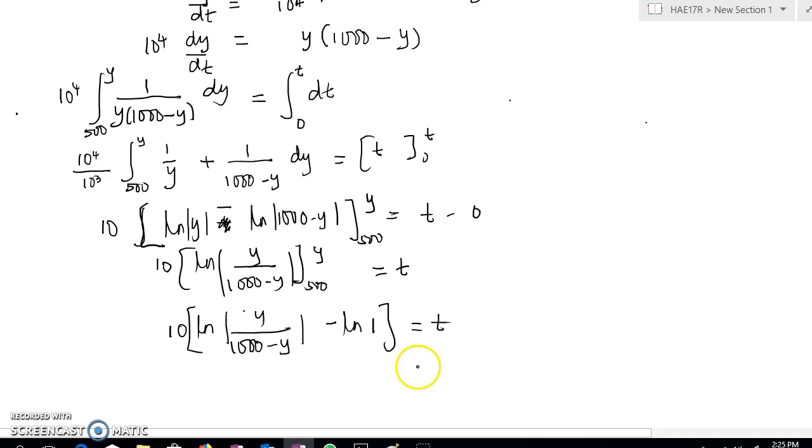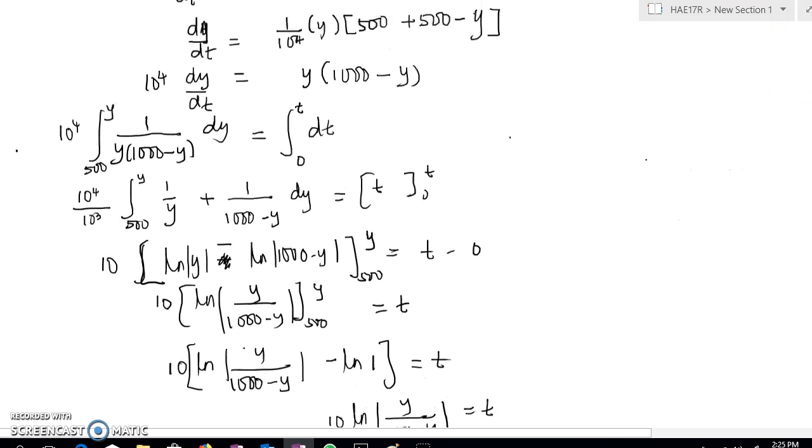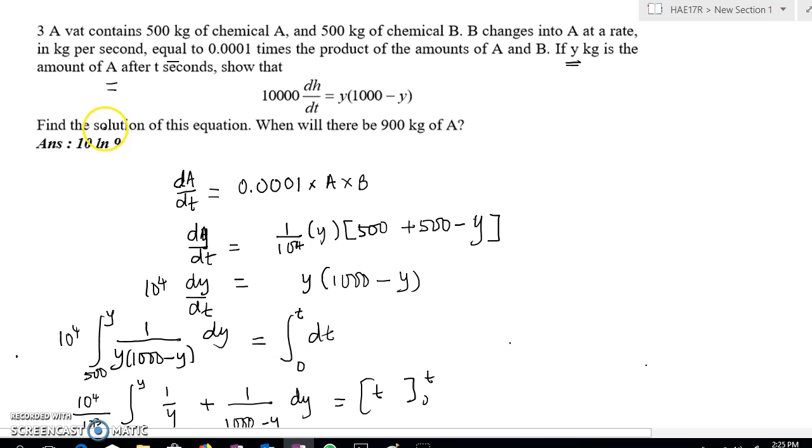So the final answer that we obtain is this: 10 ln[Y/(1000 minus Y)] equals to t. Let's check whether that's the answer that we require. They just say find the solution, so we don't have to express Y in terms of t.